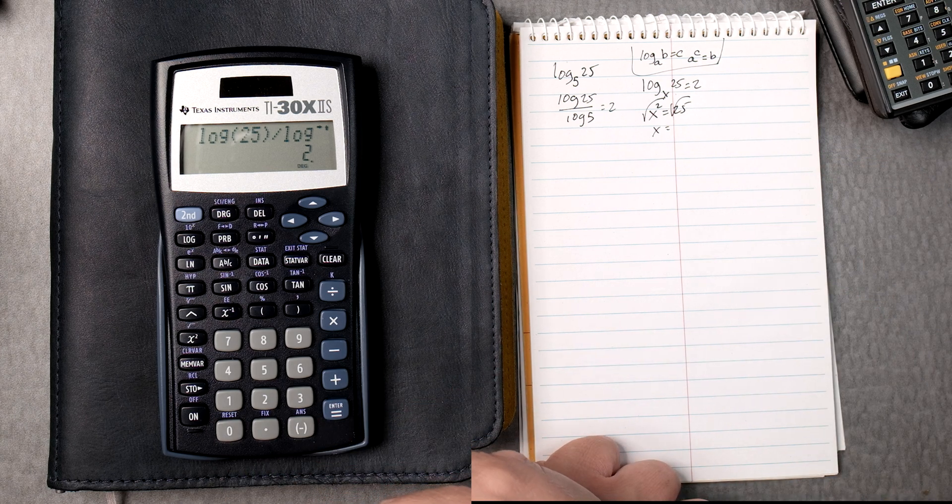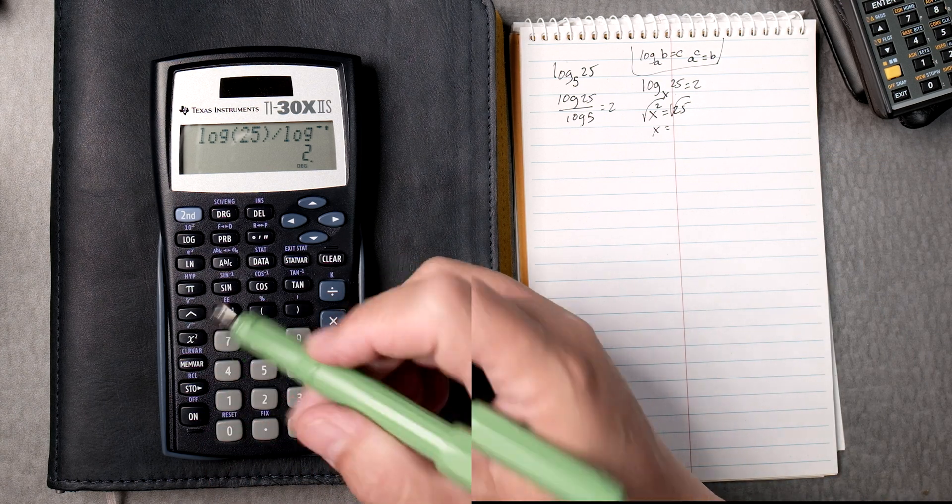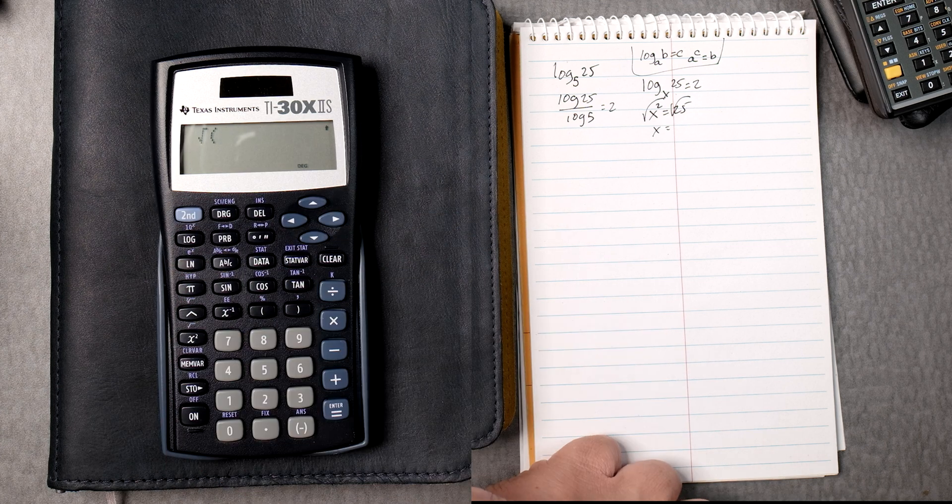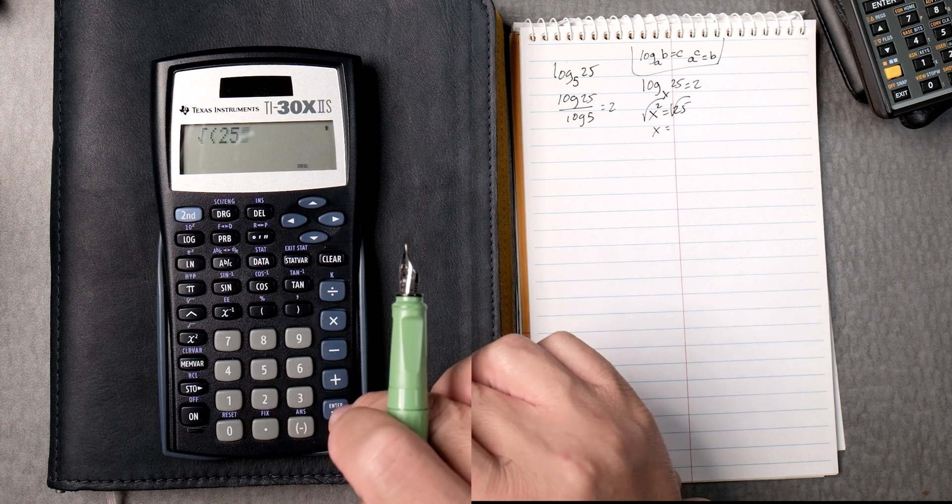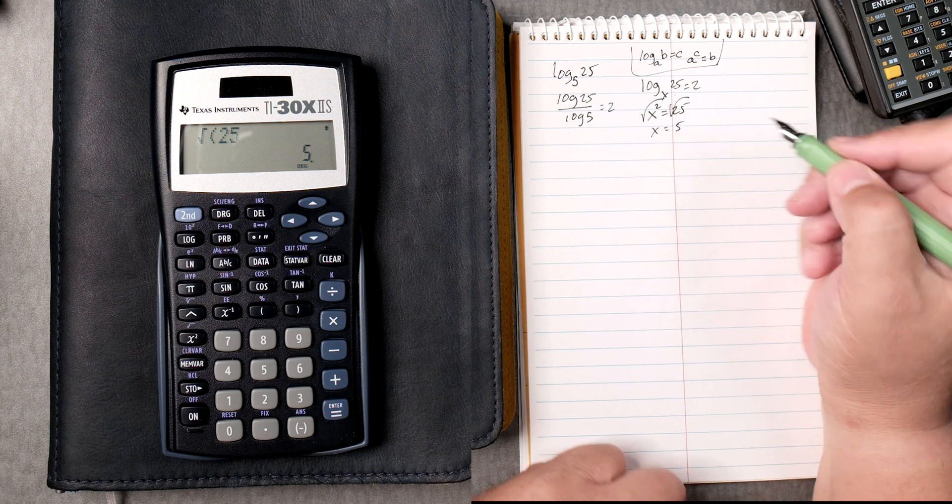So, in this case, square root is right here. Second, square root 25 equals, and that's 5. I think we knew that.